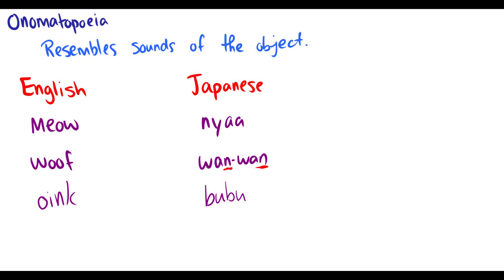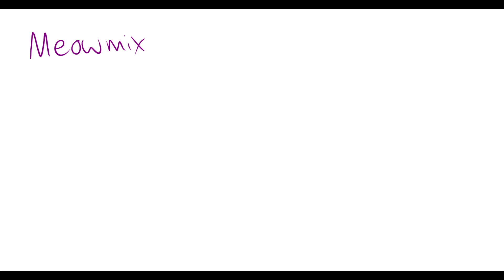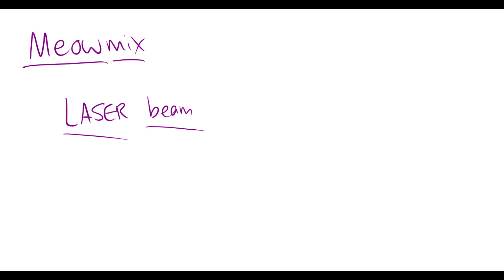But this is what we do with our words, and those are all the different ways you can create words. Some words take a couple of these processes together. For instance, meow mix — a specific brand of cat food. Meow is onomatopoeia, mix is a verb, and together they make a new noun: meow mix. That's compounding combined with onomatopoeia. Similarly, laser beam — laser is an acronym, beam is a noun, and together they make a new noun. We can do many things with words, all the time.